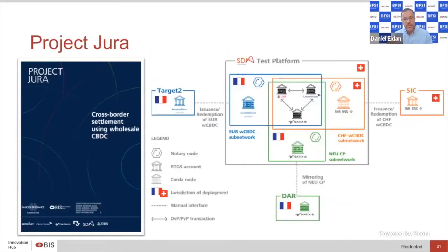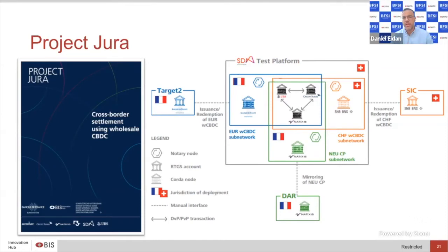This domestic vertical interoperability is orthogonal to whether that system could also connect horizontally to other payment systems in other jurisdictions. Project Jura is a great place to start for cross-border examples. It's a project between the Banque de France, the Swiss National Bank, and the BIS. In the Jura test network, you can see a representation of the Banque de France on the left, the SNB on the right, and Metixis — a French bank issuing commercial paper as natively digital assets — at the bottom.